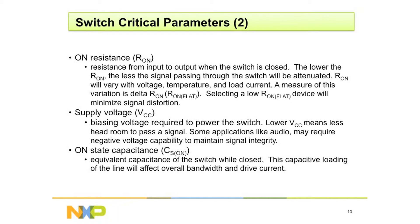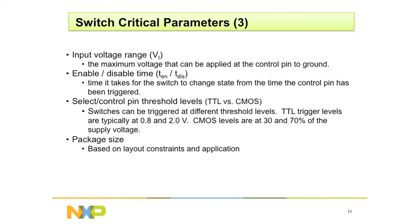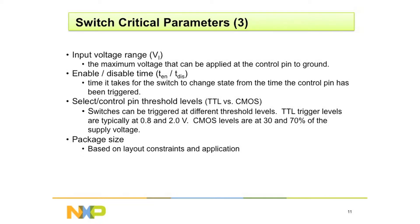On-state capacitance is essentially how high a frequency the switch can maintain — is it only DC or can it go higher? Input voltage range is the range of voltage that can go through the switch contacts. Then there's time: how long does it take for the switch to turn on and turn off? The select pin levels — what kind of signals do you use to turn them off or on? And finally, the package size. There are a lot of parameters in selecting the type of switch you need.